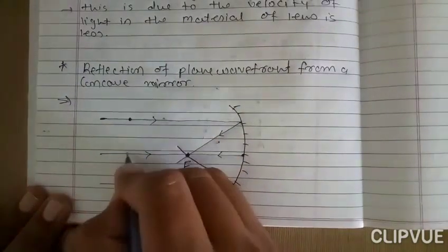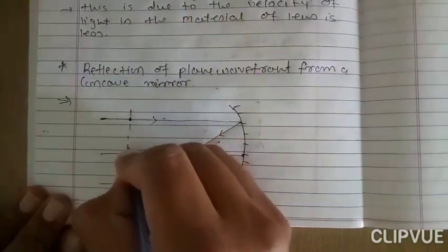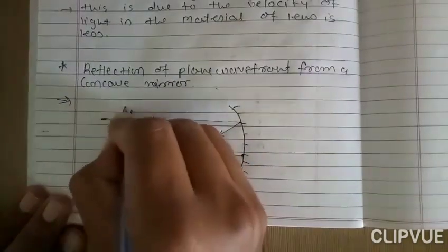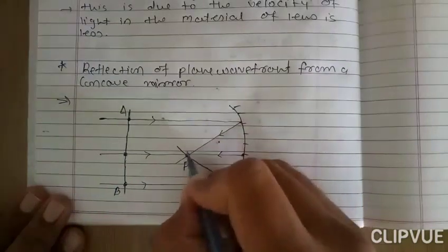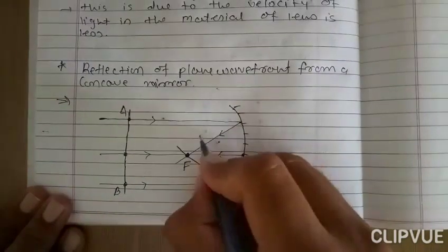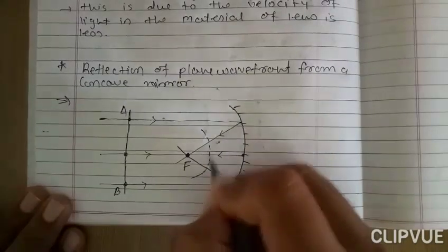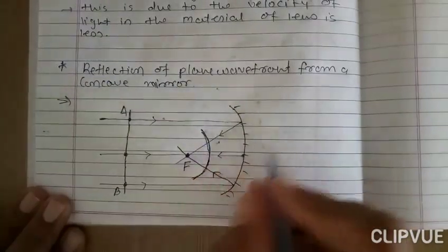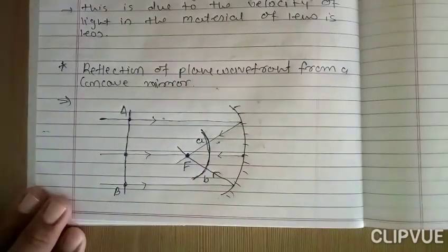If we connect these particles, this is the plane wavefront — we can say wavefront AB. Here we draw an arc taking focus F as center. This arc represents the reflected wavefront. So this arc AB is the reflected wavefront.